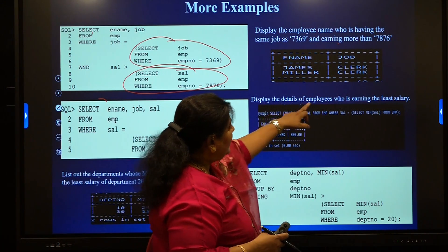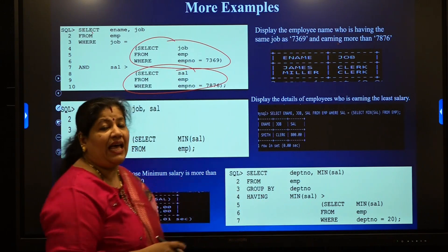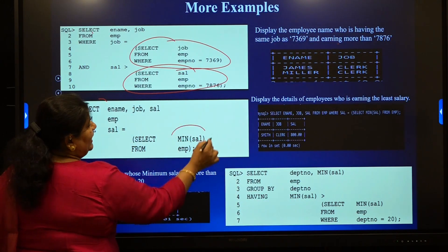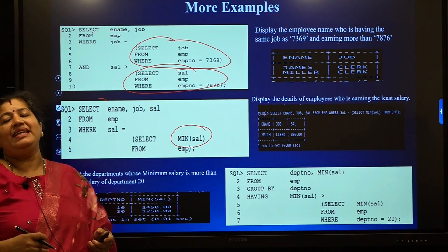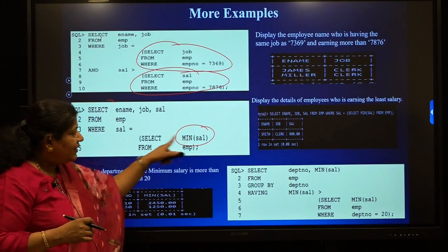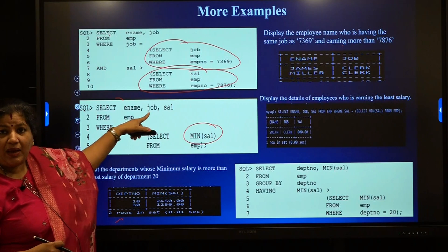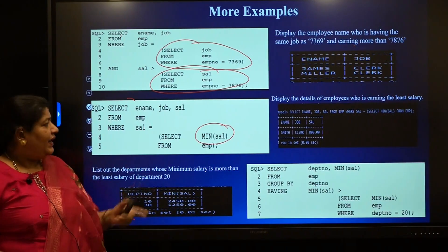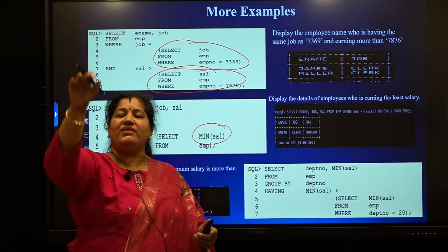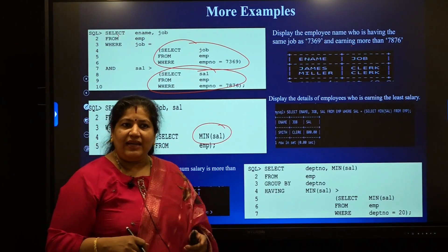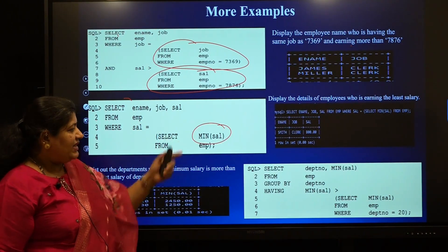Another example: display the details of employees who are earning the least salary. First, find the least salary using an aggregate operator from the EMP table — let us assume 800 is the least salary. Then find the names of the employees who are earning 800. That gives you the employees earning the least salary.